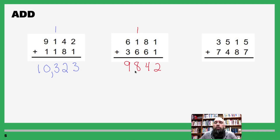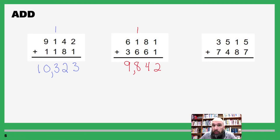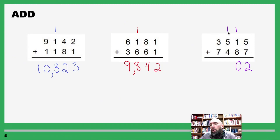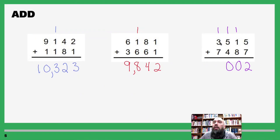Done — put your comma and you're done! Go to your ones: five plus seven is twelve. Write down the two, carry the one. One plus one is two, two plus eight is ten — write out your zero, carry the one. One plus five is six, six plus four is ten — write out the zero, carry the one. One plus three is four.